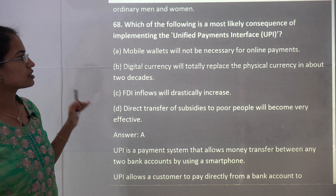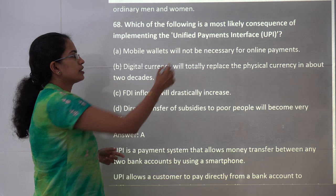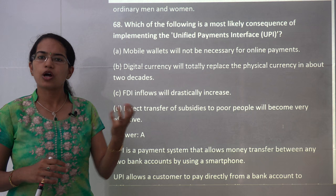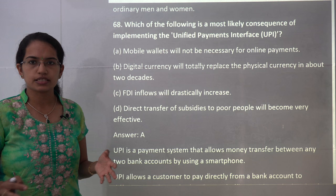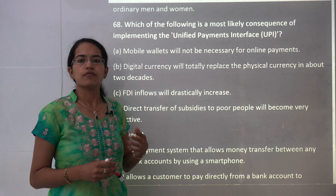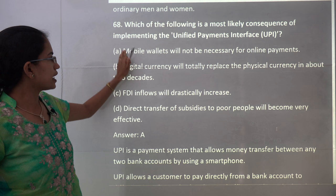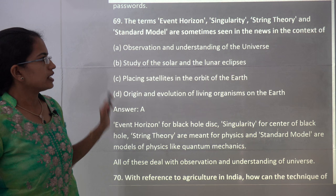The next question asks about the most likely consequence of implementing the Unified Payment Interface (UPI). Under UPI, payment can be made directly through a smartphone without needing a mobile wallet, as it is a direct bank-to-bank transfer that does not require an IFSC code or bank account number. The consequence is that mobile wallets would no longer be necessary for online payments. So A is the correct answer.